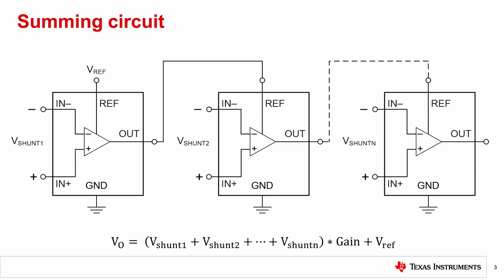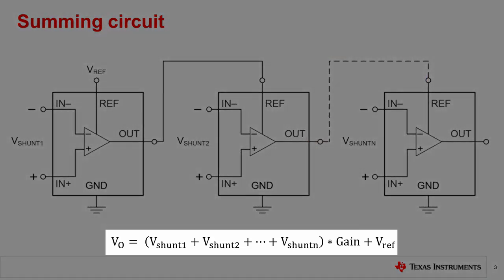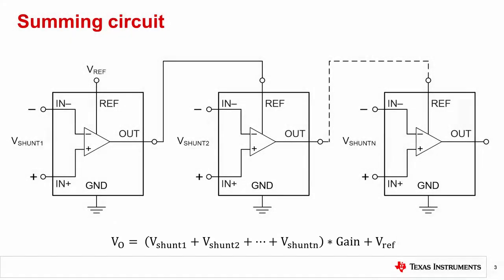In this implementation, the inputs to multiple current sense amplifiers can be added together by connecting the output of the previous stage to the ref input of the next stage. This implementation can be chained as many times as needed within reason. The output voltage is equal to the sum of the inputs of all stages multiplied by their gain and added to V ref. This circuit requires the gain of each stage to be the same. The technique of connecting the output of one device to the ref pin of another enables more useful circuits, as shown in the following examples.